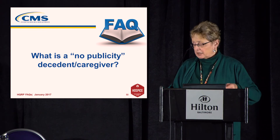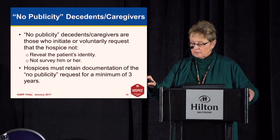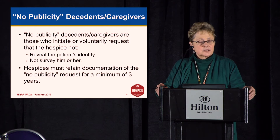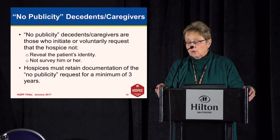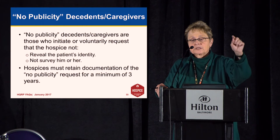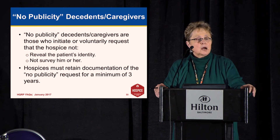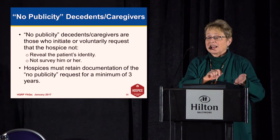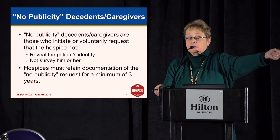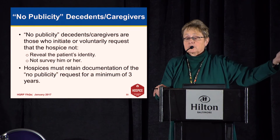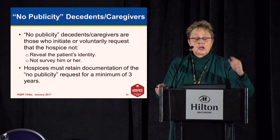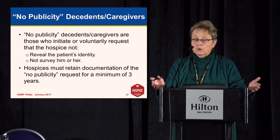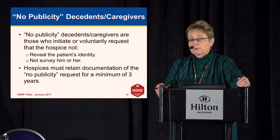Some of you have heard of the no-publicity patient. The no-publicity patient or caregiver are those who initiate or voluntarily request that the hospice not reveal the patient's identity or not do a survey. The initiation of this request must come from the patient or caregiver — it can't come from the hospice. You cannot approach patients and ask if they want to answer a survey. This is for situations where, for example, a locally well-known person doesn't want their information revealed. You must retain documentation of the no-publicity request for a minimum of three years.